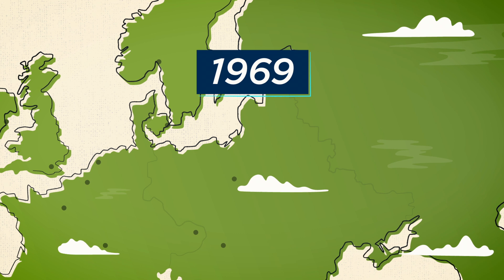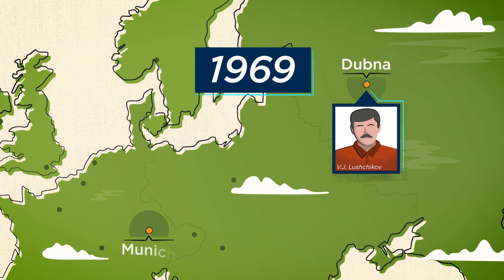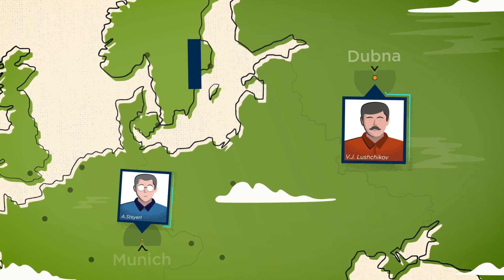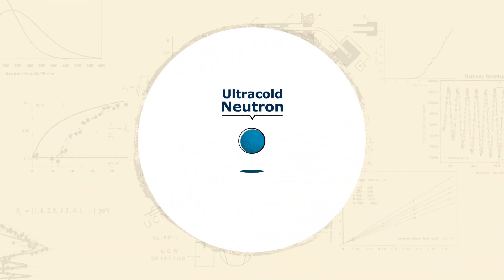In 1969, two groups of scientists, one Russian and the other German, reported on the discovery of a major phenomenon in particle physics: the ultra-cold neutron.